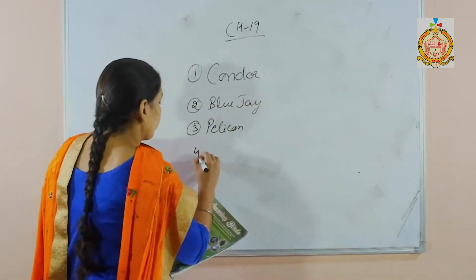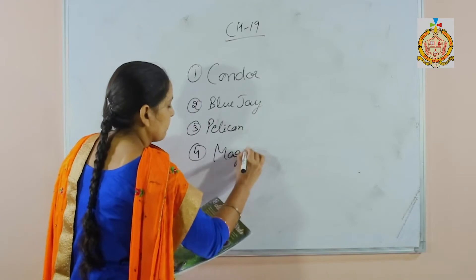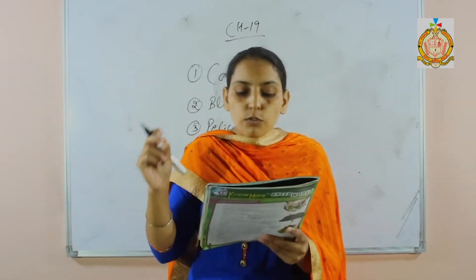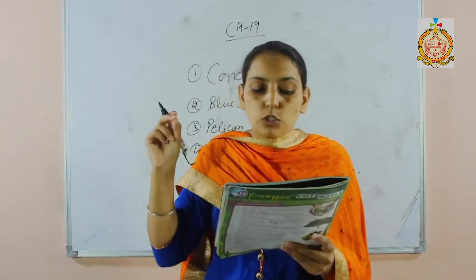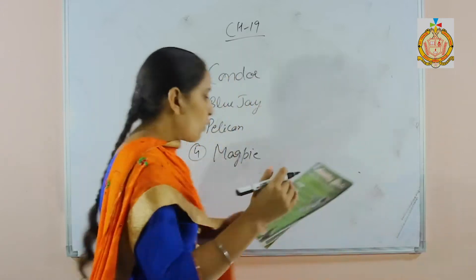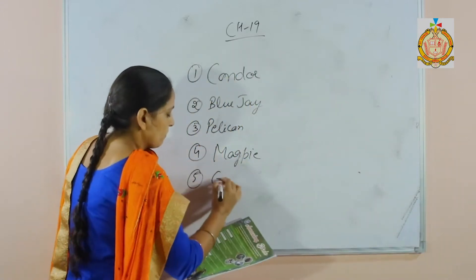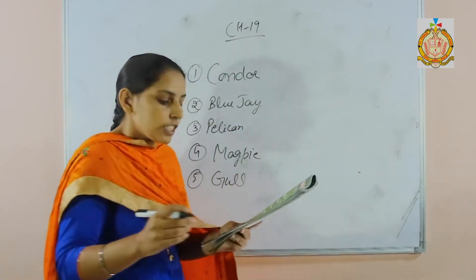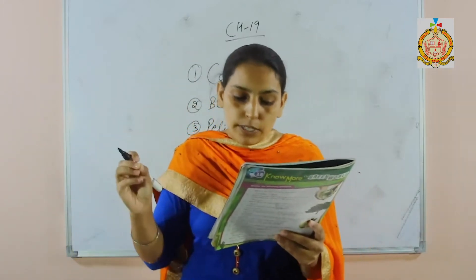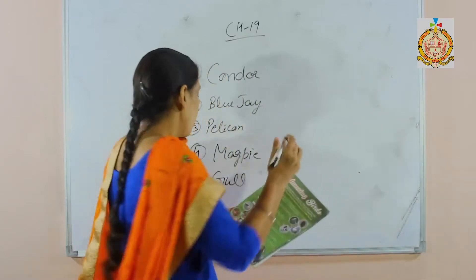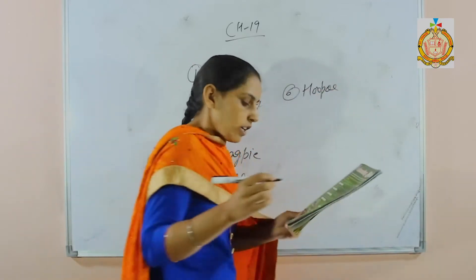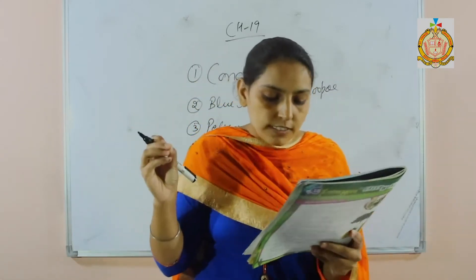Next, fourth is the magpie. This is one of the few animal species not able to recognize itself in the mirror. Next is the bulb — it has long-winged webbed feet and is a sea bird. Next is the hoopoe — it has a distinctive crown of feathers.